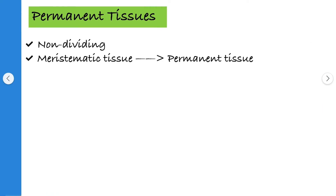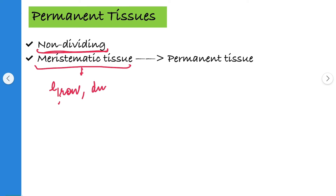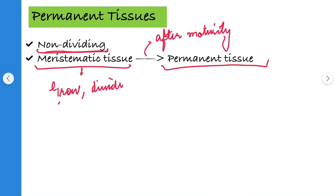Now we will discuss about permanent tissues. Permanent tissues are non-dividing — they are present in plants but they have lost the ability to divide. The meristematic tissues grow and divide, and after maturity they become the permanent tissues. Meristematic tissues reach a maturing stage and they no longer further divide, so they become the permanent tissues.